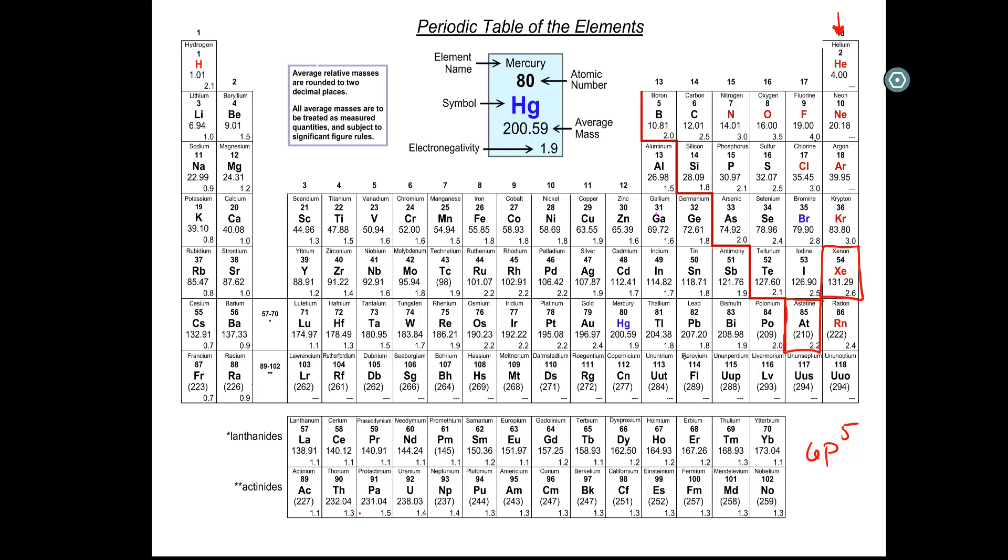So what we wanna do is identify the noble gas immediately above the element you're dealing with. So for astatine, move up one row and go all the way to the end to xenon. Xenon is a noble gas that is the closest to astatine.